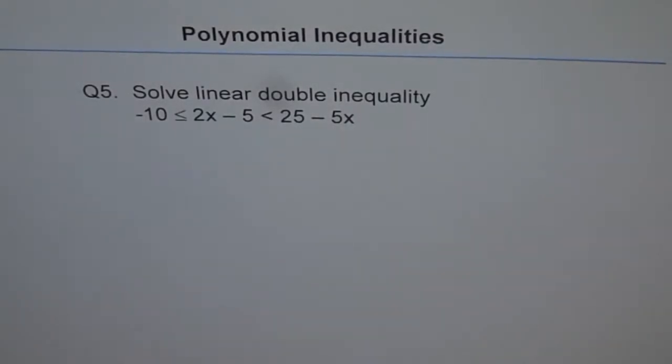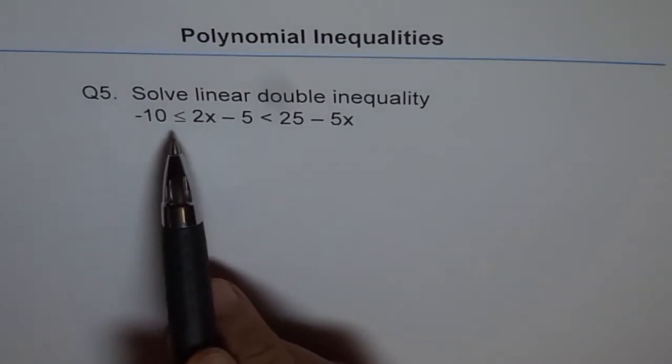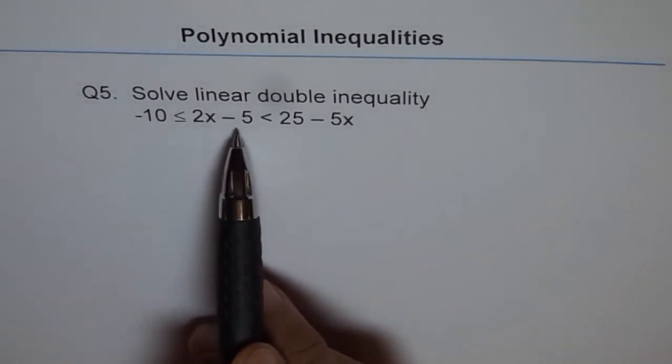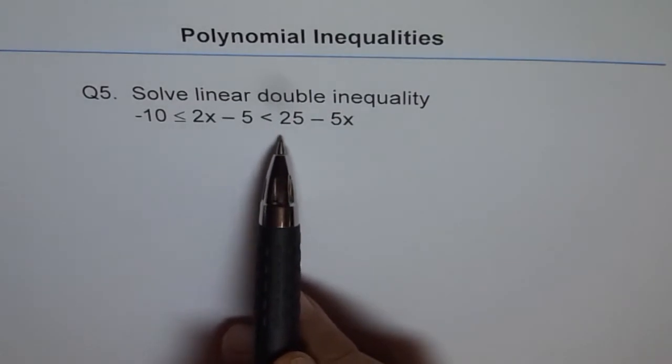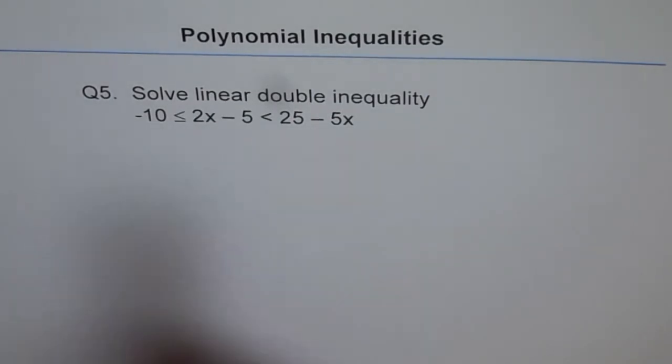Question 5. Solve linear double inequality. So here we have inequality as minus 10 less than equal to 2x minus 5, which is less than 25 minus 5x.